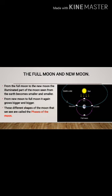From full moon to the new moon, the illuminated part of the moon seen from the earth become smaller, smaller and smaller and from new moon to the full moon, it again grows bigger and bigger. These different shapes of the moon that we see are called phases of the moon.